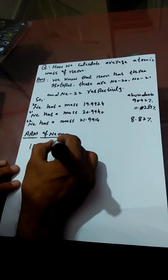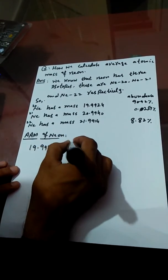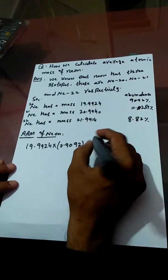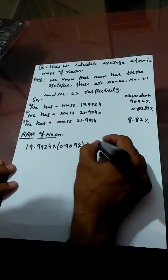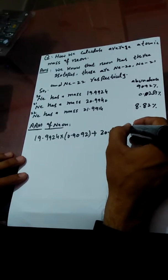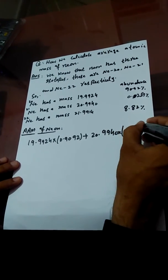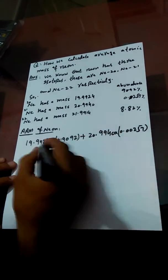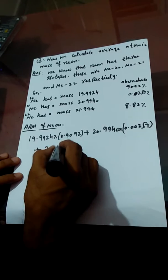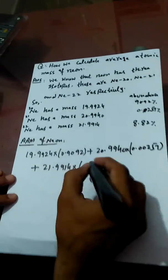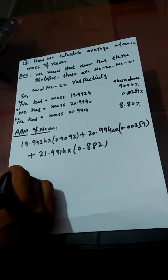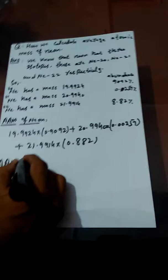19.9924 multiplied by 0.9092, then we add the second term: Neon-21 has a mass of 20.9940 AMU and its isotopic abundance is 0.00257. Plus the third term: Neon-22 has a mass of 21.9914 AMU with isotopic abundance 0.0882.